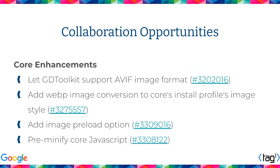If you're more into technical stuff, there are a bunch of issues in the core queue that would improve performance — like adding support for contemporary image formats such as AVIF. WebP is already supported and usable in image styles, but the standard installation profile still doesn't use it, so helping with that would improve out-of-the-box performance. There are also issues around pre-loading images and minifying core JavaScript. If you're interested in these topics, check out these issues. And if you have any questions, ideas, or comments, please get in touch — our email inboxes are open for anything that could improve Drupal as a whole.